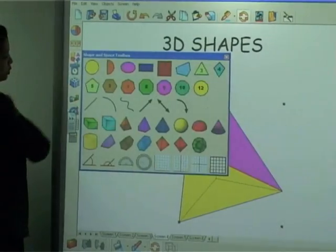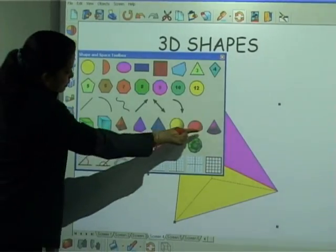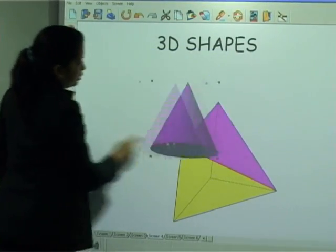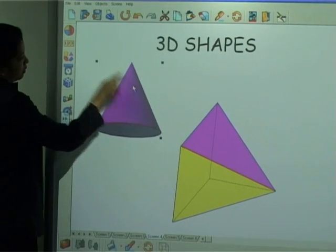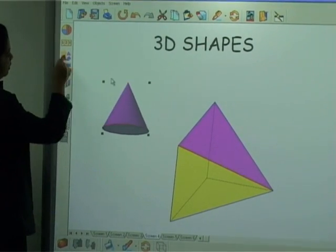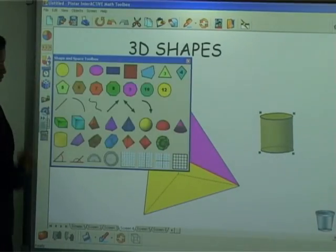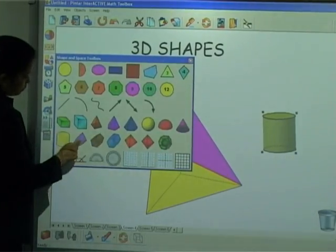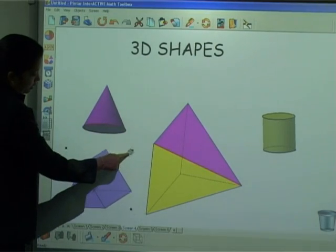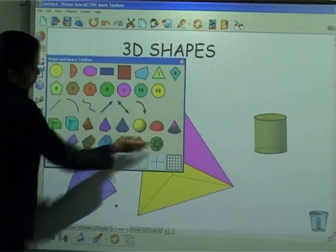Besides this, we also have other shapes such as cone, cylinder, prism, and we have many more here.